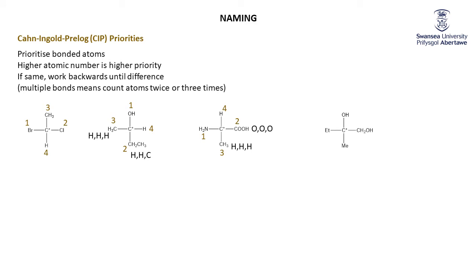One last example before we discuss why we're doing this. We have a carbon bonded to an oxygen, and three carbons. Obviously, oxygen is the top priority. For the carbons: methyl is H, H, H; ethyl is H, H, C — so ethyl beats methyl. The CH₂OH group is H, H, O — an oxygen beats a carbon. Therefore: priority one is the oxygen group, two is the CH₂OH, three is the ethyl, and four is the methyl.